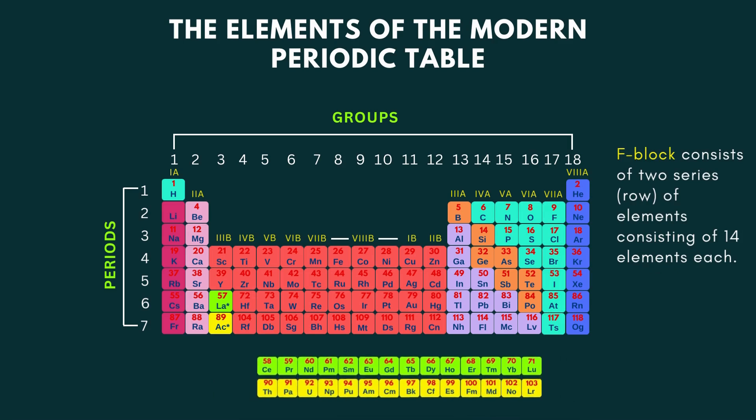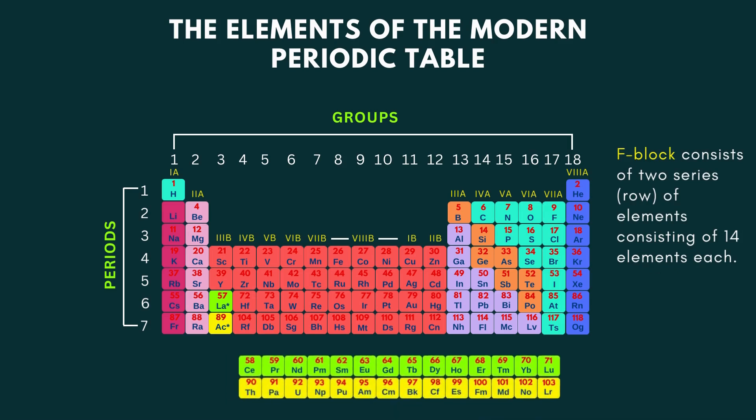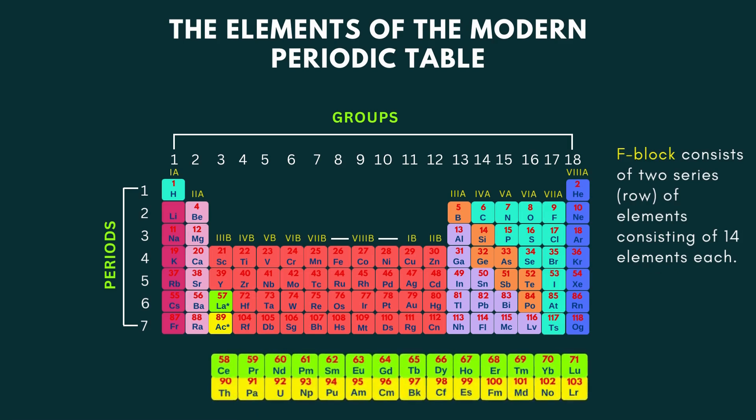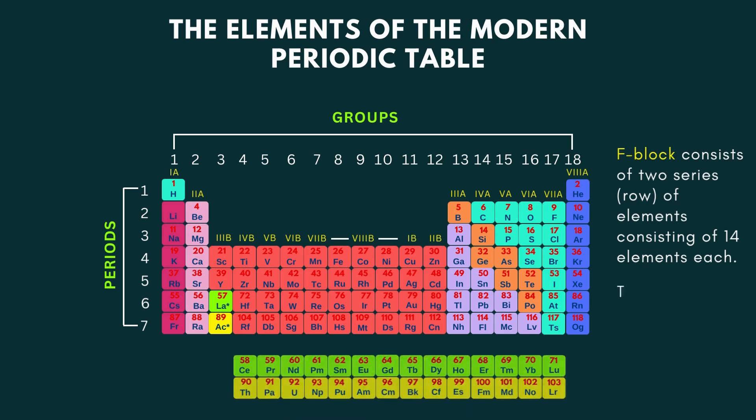F block consists of two series of elements consisting of 14 elements each. These are called lanthanide series and actinide series.